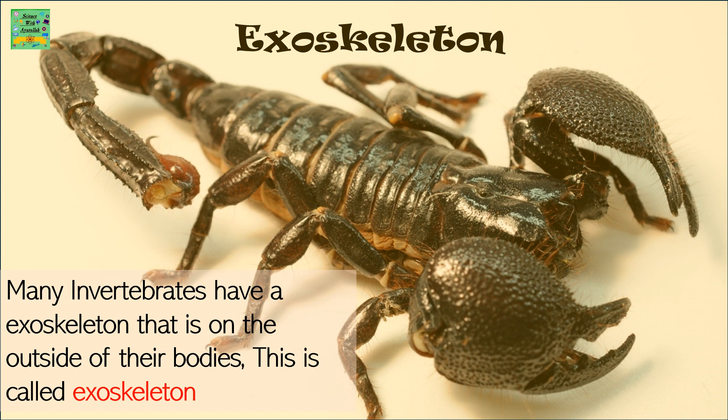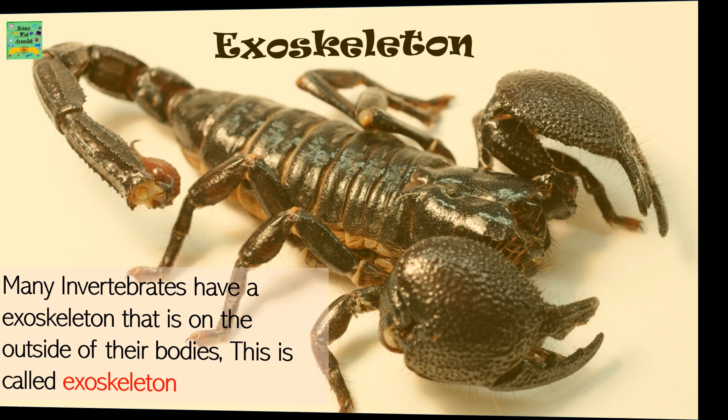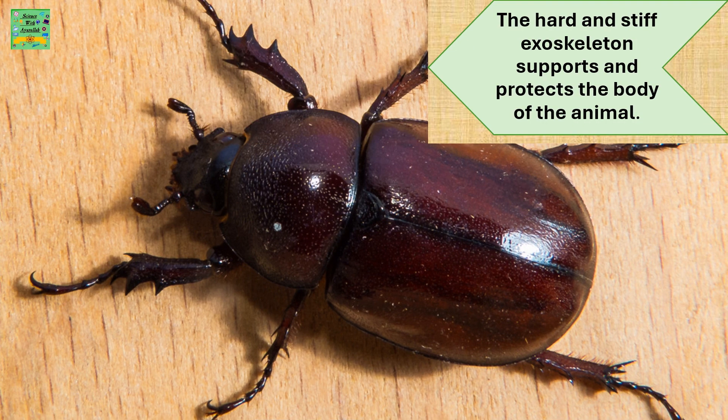Exoskeleton. Many invertebrates have an exoskeleton on the outside of their bodies — this is called an exoskeleton. The hard and stiff exoskeleton supports and protects the body of the animal. A few animals or insects such as crabs and beetles have a hard outer covering, which is called an exoskeleton.